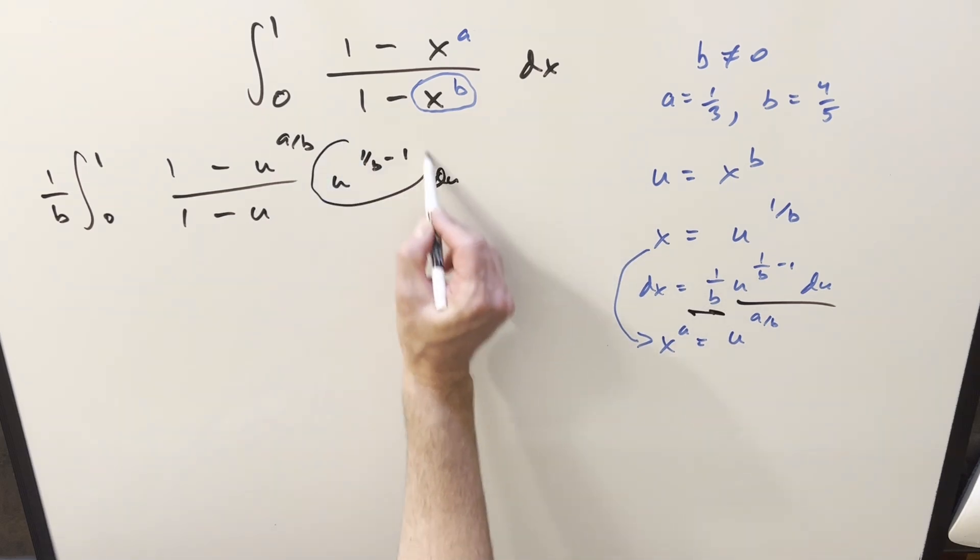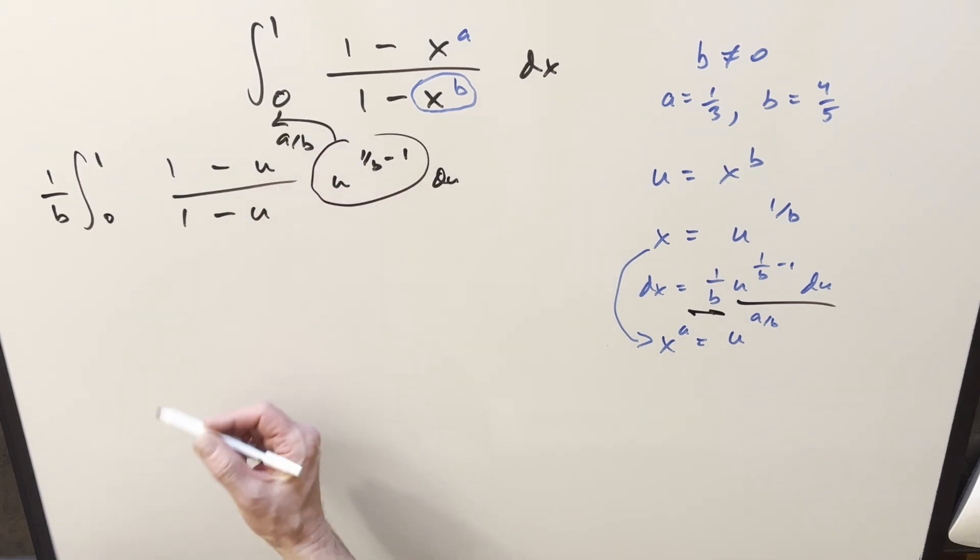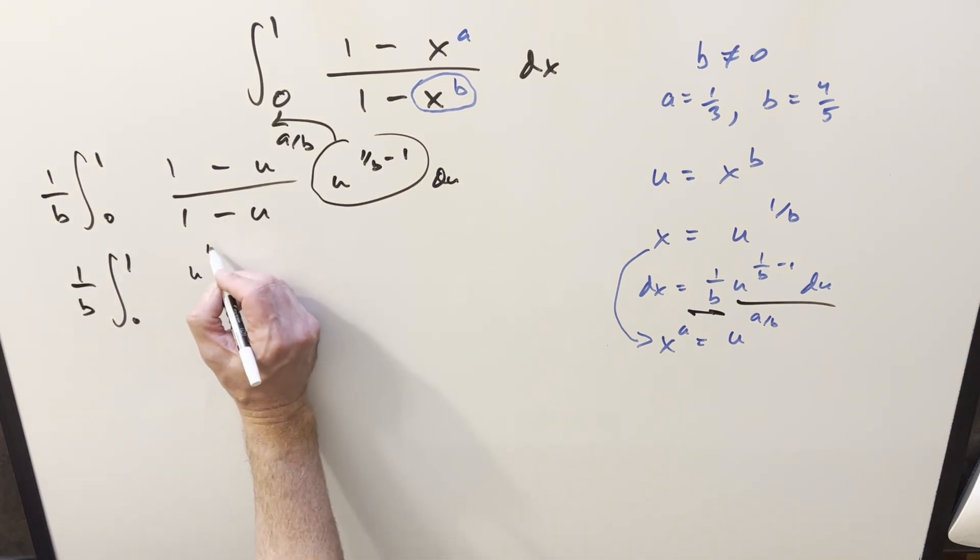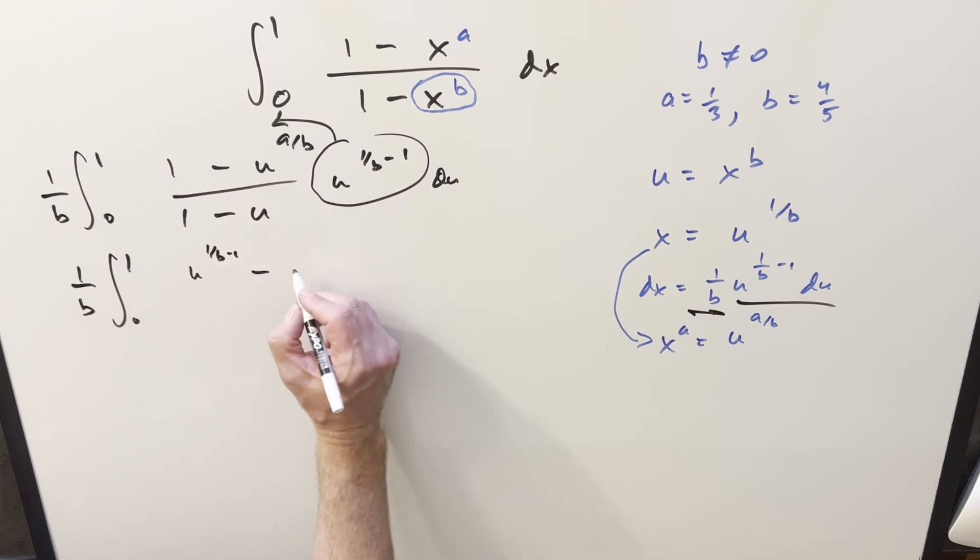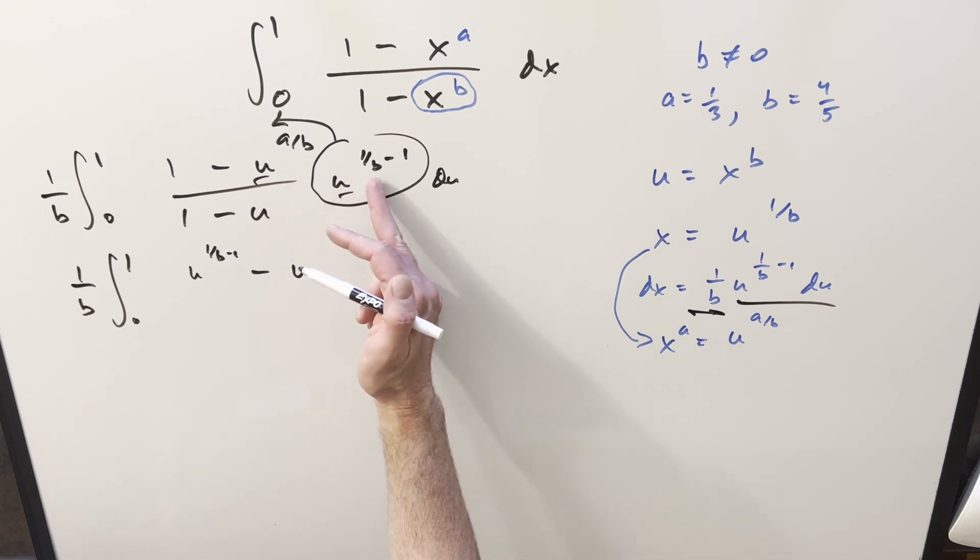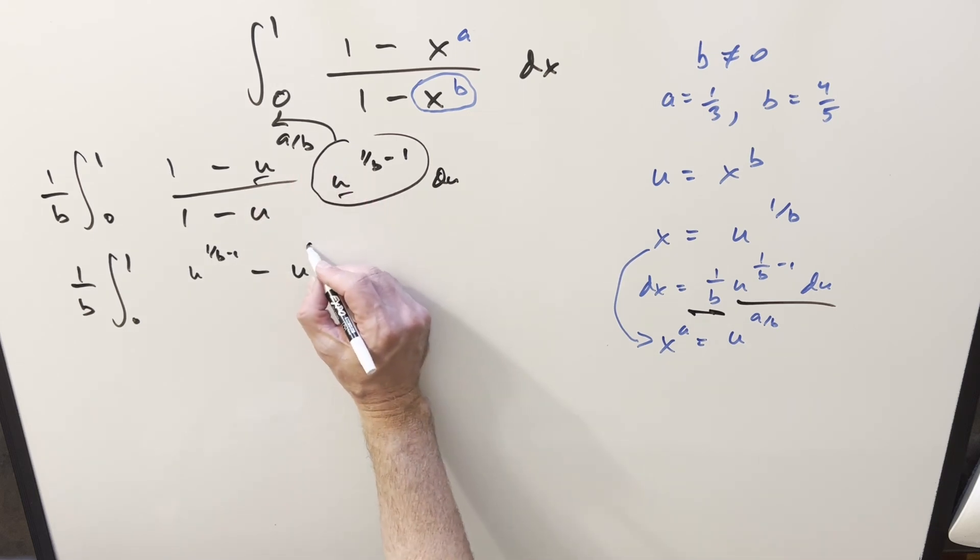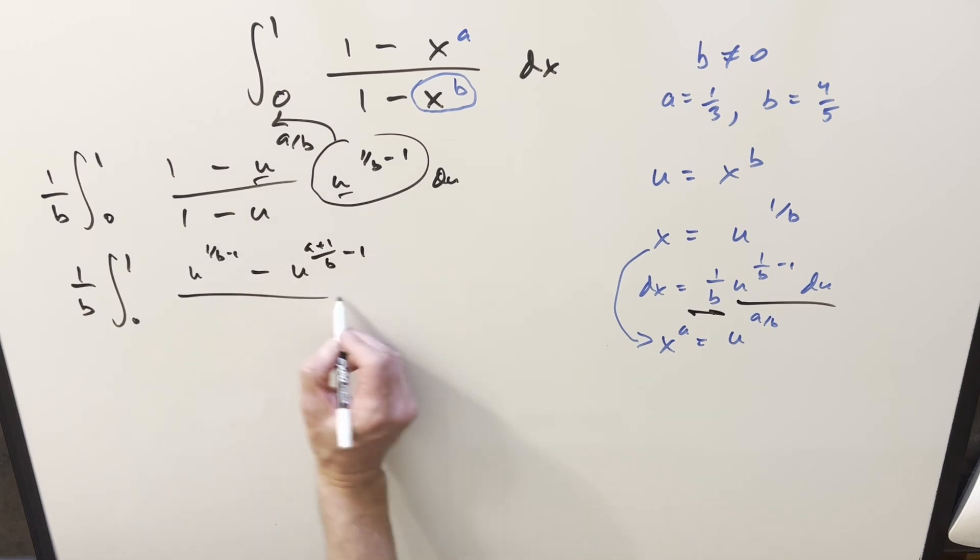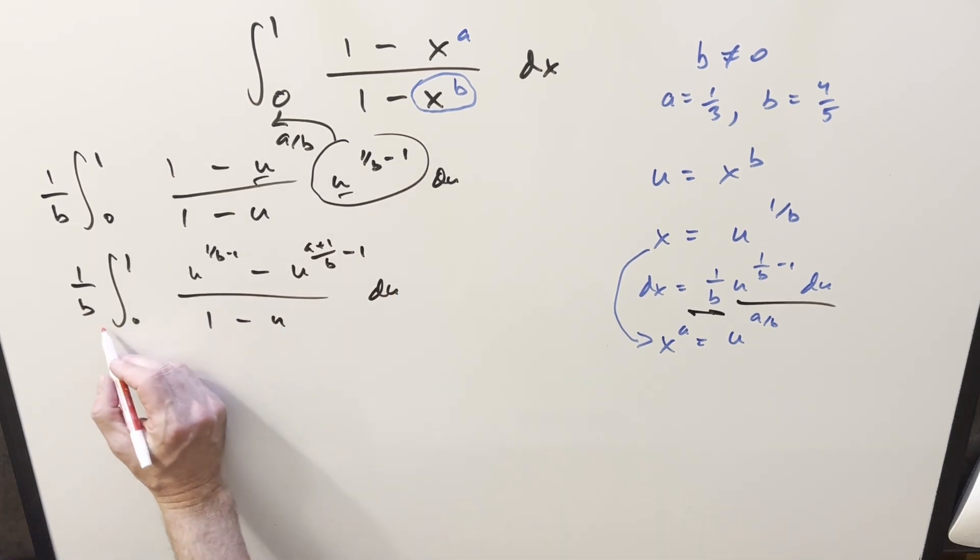Now let's take this piece here and just distribute it back in to get a simpler looking term. So we've got our 1/b in front. This numerator becomes u^(1/b - 1). This part, when we combine, we get the same base here. We also have this common denominator with the b here. So I can write this as (a + 1)/b - 1, all over 1 minus u du. And then for this thing right here, going from 0 to 1, I want to notice the similarity we have to a formula for the digamma function.